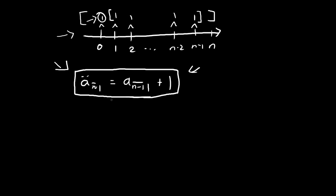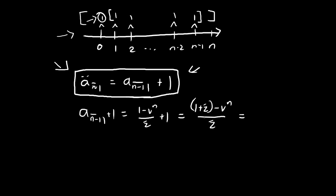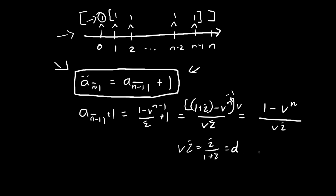This formula is also worth knowing, and you can prove it algebraically. Just add those terms together: take a_{n-1} plus 1, multiply numerator and denominator by v. On top we get 1 minus vⁿ, and at the bottom we get v times i. Note that v·i equals i divided by (1 plus i), which equals d. So we get (1 minus vⁿ) divided by d, which is the present value of the annuity due — confirming our formula. I hope this helped. See you in the next video.